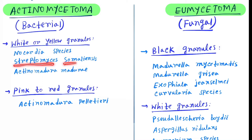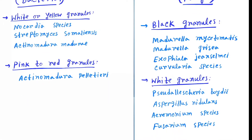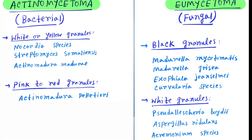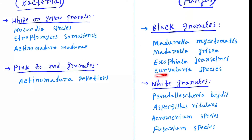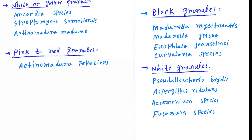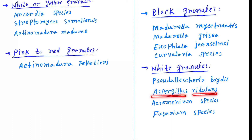Pink to red granules are produced by Actinomadura pelletieri. Black eumycetoma with black granules is produced by Madurella mycetomatis, Madurella grisea, Exophiala jeanselmei, and Curvularia species. White granules are produced by Pseudallescheria boydii, Aspergillus nidulans, Acremonium species, and Fusarium species.